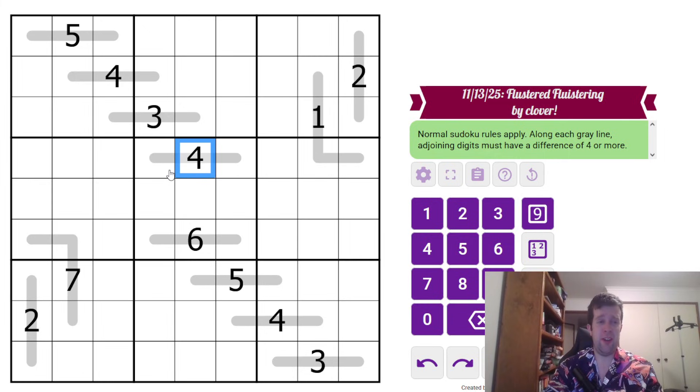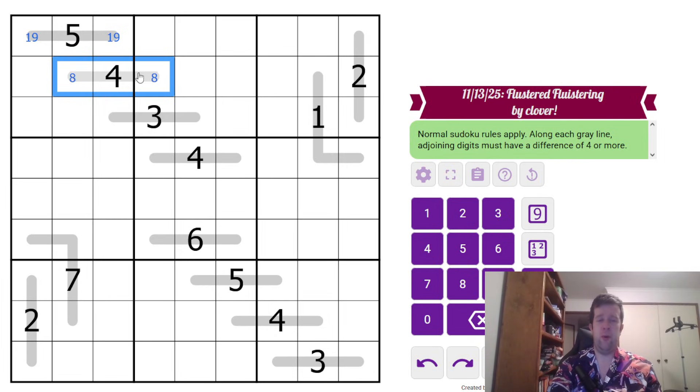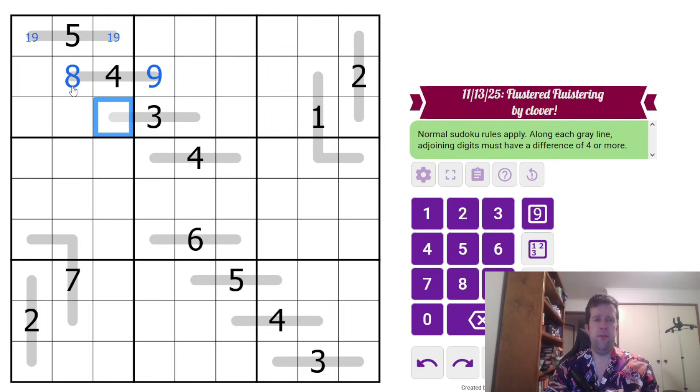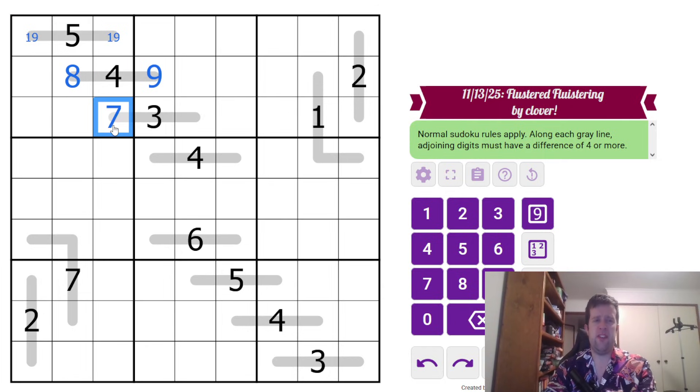So, five needs to have a gap of one or nine because that's the only way to do it. Four needs to be eight or nine. One nine pair means that this has to be eight, and then nine. Three can either be seven, eight, or nine. This digit can't be eight or nine, so it has to be seven. And we've already got nine in the box, making it eight.